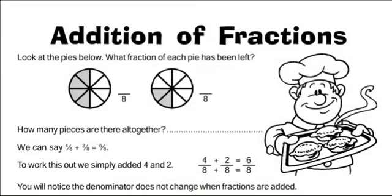When you first start adding fractions, you're probably going to use models, a bit like this. So here we've got so many parts out of 8 — how many? Well, it's the amount that's shaded: 1, 2, 3, 4 parts out of 8.